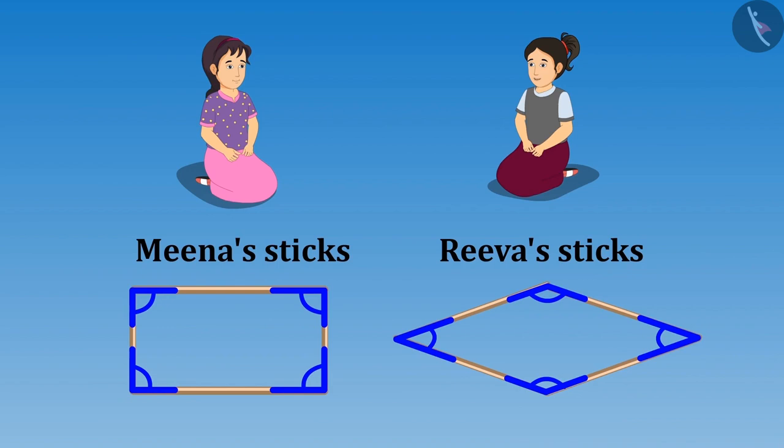Oh yes! But why is it so sister? Because the angles in both figures are different. Just look here, the angles in your figure are like this. And the angles in my figure are like this. Because of different angles, the shape of figures are also different.